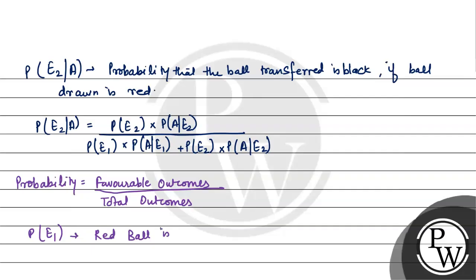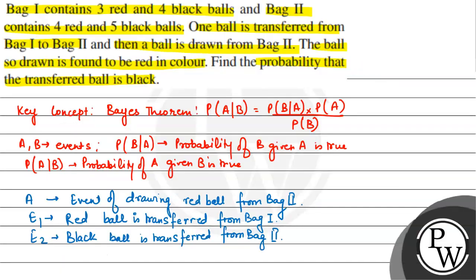Now, if a red ball is transferred from Bag 1 to Bag 2 — Bag 1 has 3 red and 4 black balls. So the probability of E1, that is a red ball is transferred, equals 3 out of the total 7 balls in Bag 1, giving us 3 by 7.